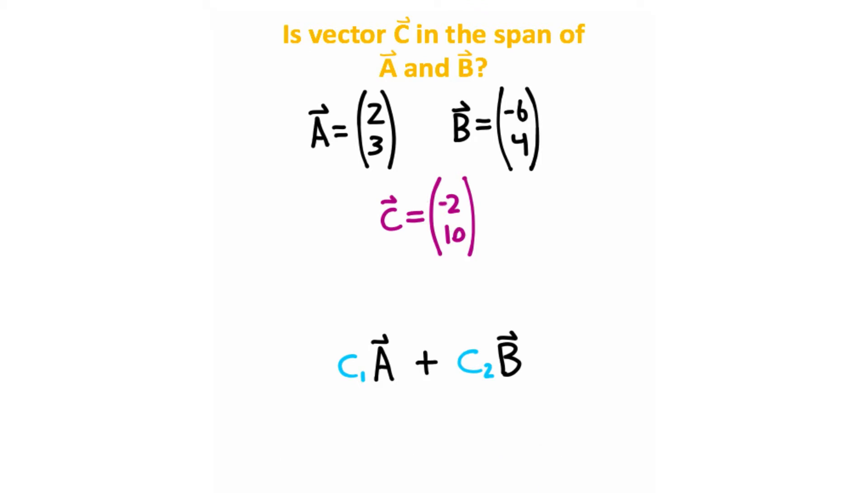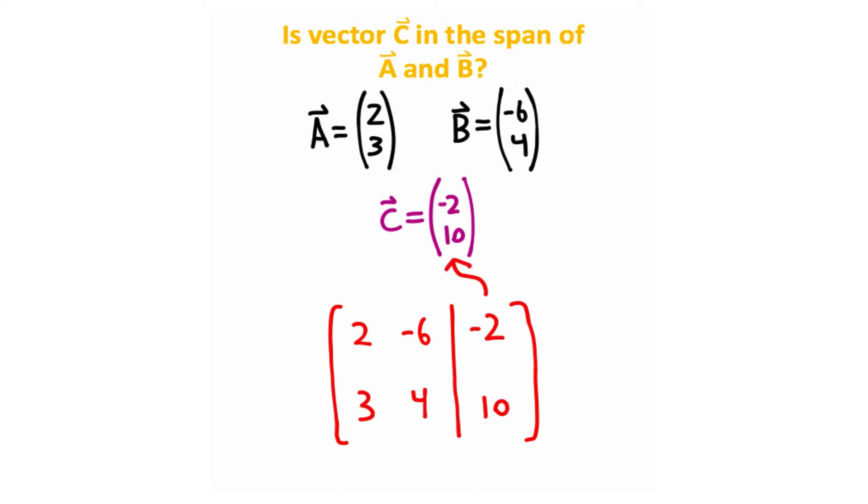So in order to do this, there are actually a couple ways you can do it. You might be able to just eyeball this and figure out which two constants we need, but I'm going to show you the more formal way of linear algebra, which is setting up a matrix. Now what I'm going to do for this matrix is take vectors A and B and put them on one side of the matrix, and I'm going to do an augmented matrix with vector C on this right side here. So this is what our matrix looks like right here.